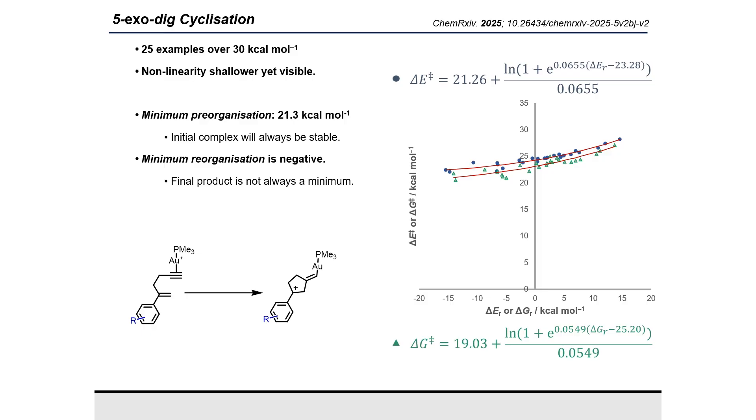On the other hand, the minimum reorganization energy, defined as E_min minus E_EQ, is found to be negative. This means that the final product is not always a minimum, and if the reaction is disfavored enough, the final product would revert back to the reactant without any barrier. This gives very interesting insights for this reaction.